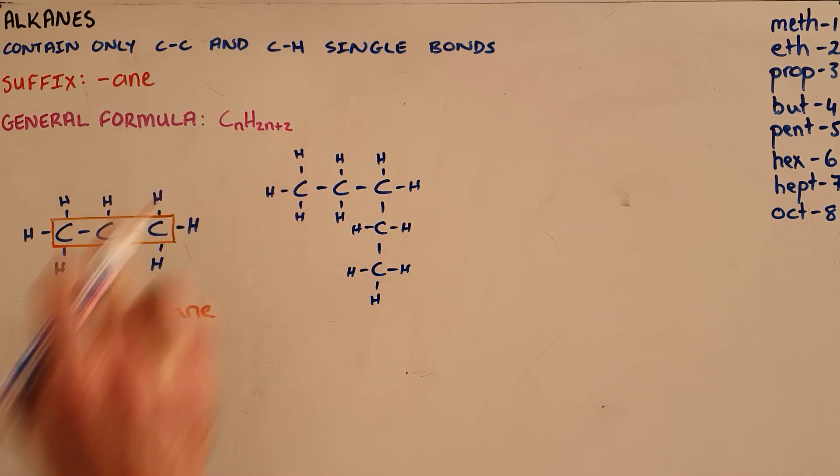We can see here that this compound contains three carbons and eight hydrogens and therefore abides by the formula CnH2n+2. We can also draw this in condensed structural formula as CH3, CH2, CH3.